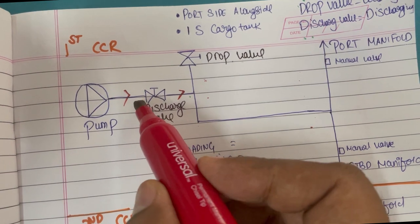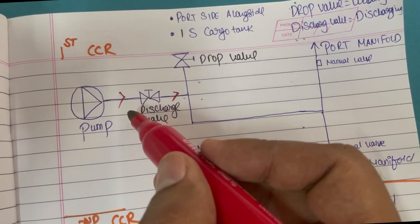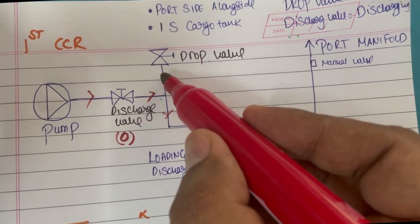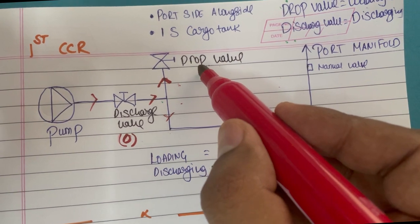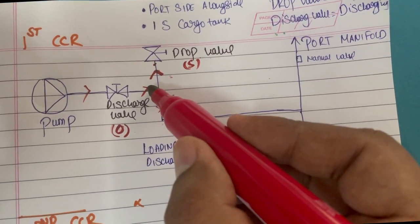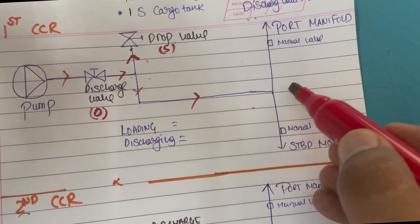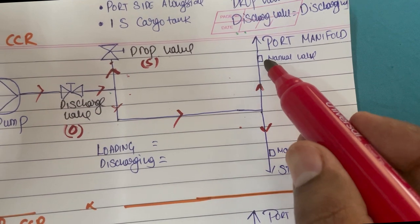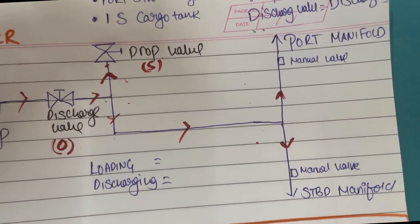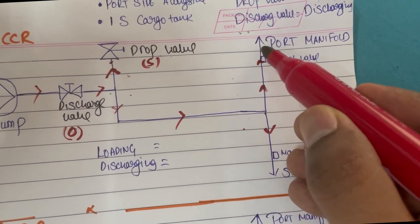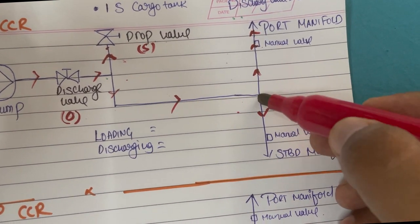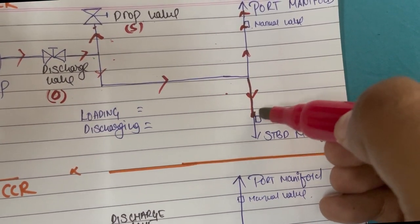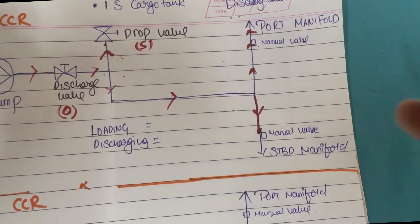For discharging from this CCR panel, first we start the pump. The cargo will flow and we open the discharge valve. The cargo will flow in both directions — port side and starboard side. Since we are not loading, we keep the drop valve shut. The cargo stops at that junction, flows along the line, goes to both port and starboard sides of the manifold.